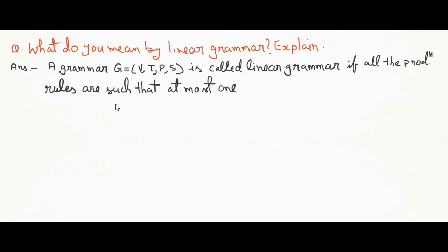So we can say that a grammar G equals VTPS is called linear grammar if all the production rules are such that at most one variable occurs on the right side of the production and there is no restriction on the position of the variable.